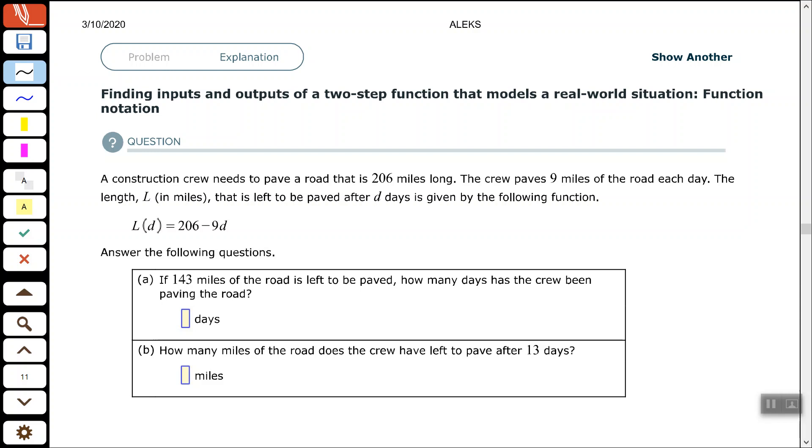So the length after a certain amount of days is given by the function: L(D) equals 206 minus 9D, where 206 is the total that they had to pave and nine miles per day is the rate.